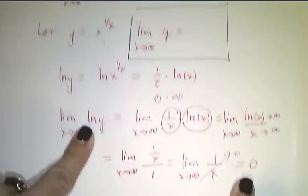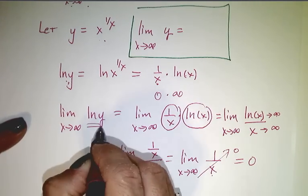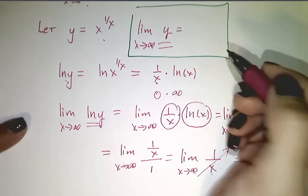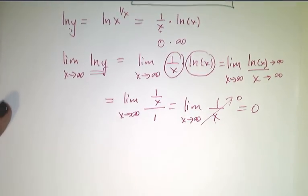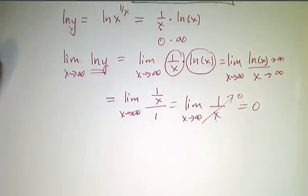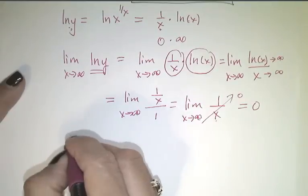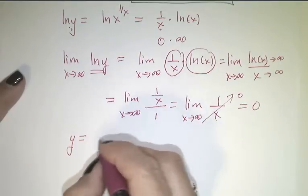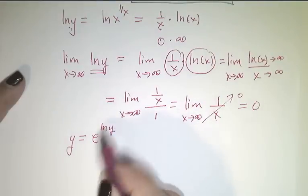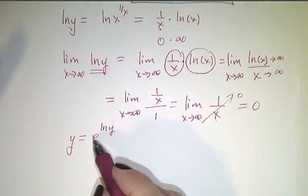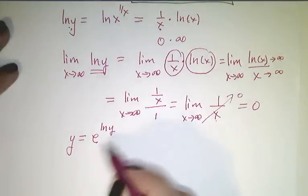Remember, I wanted the limit of y, not ln(y). My next task is to write y in terms of the natural log of y. That's not too bad because I remember the relationship between y, ln(y), and e. I'm going to pull this out: y equals e to the ln of y, because these are inverse functions and they undo each other. If I take e to the natural log of y, I just land back at y.